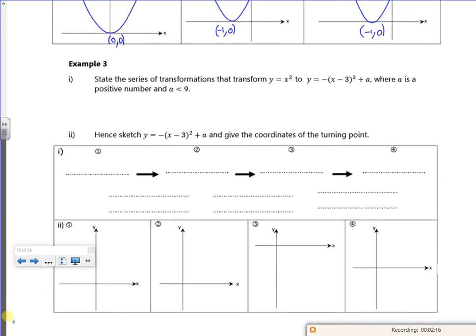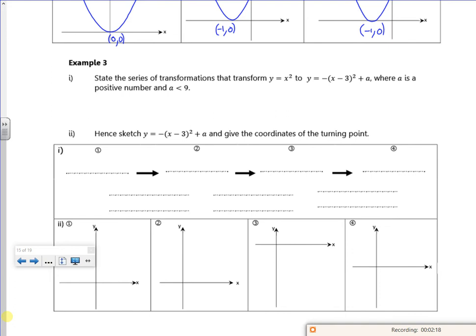So we'll look at example 3. So what we've got. First one is a translation 3, 0.